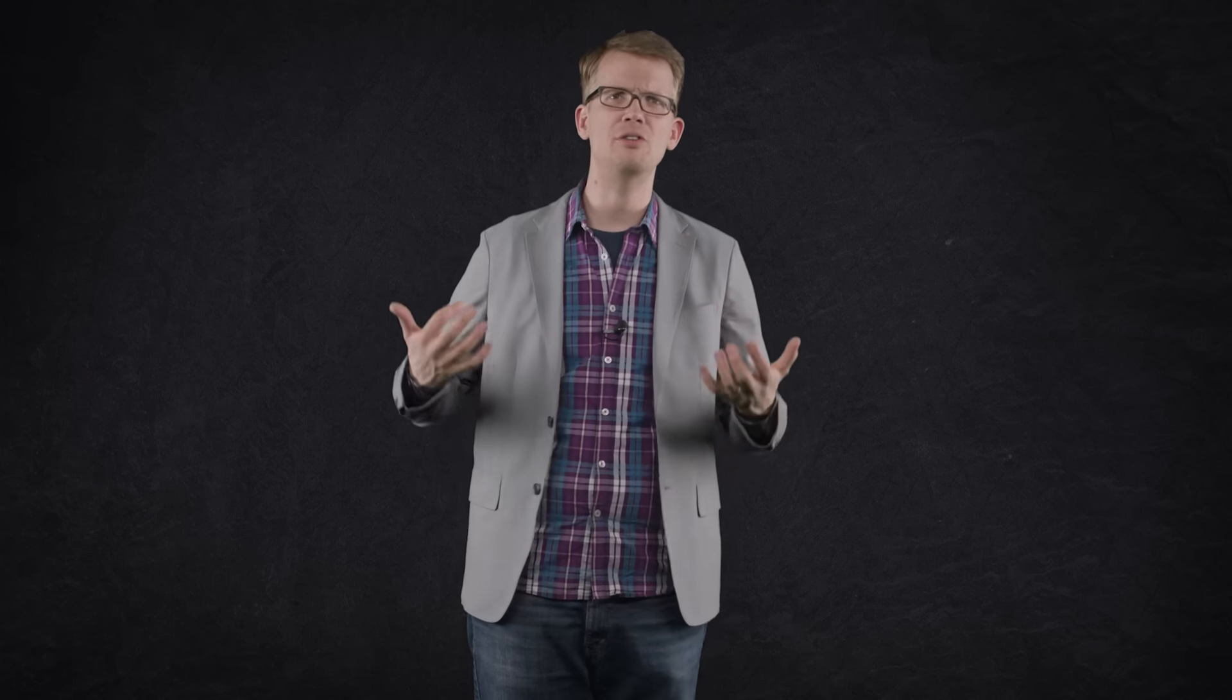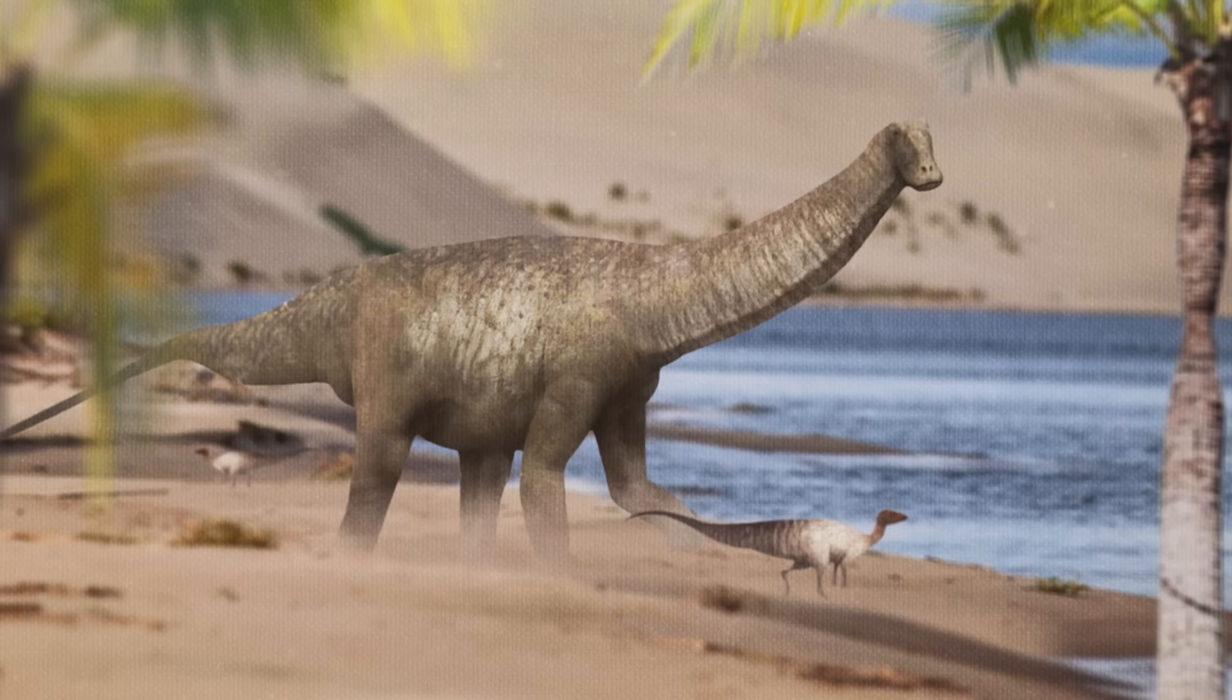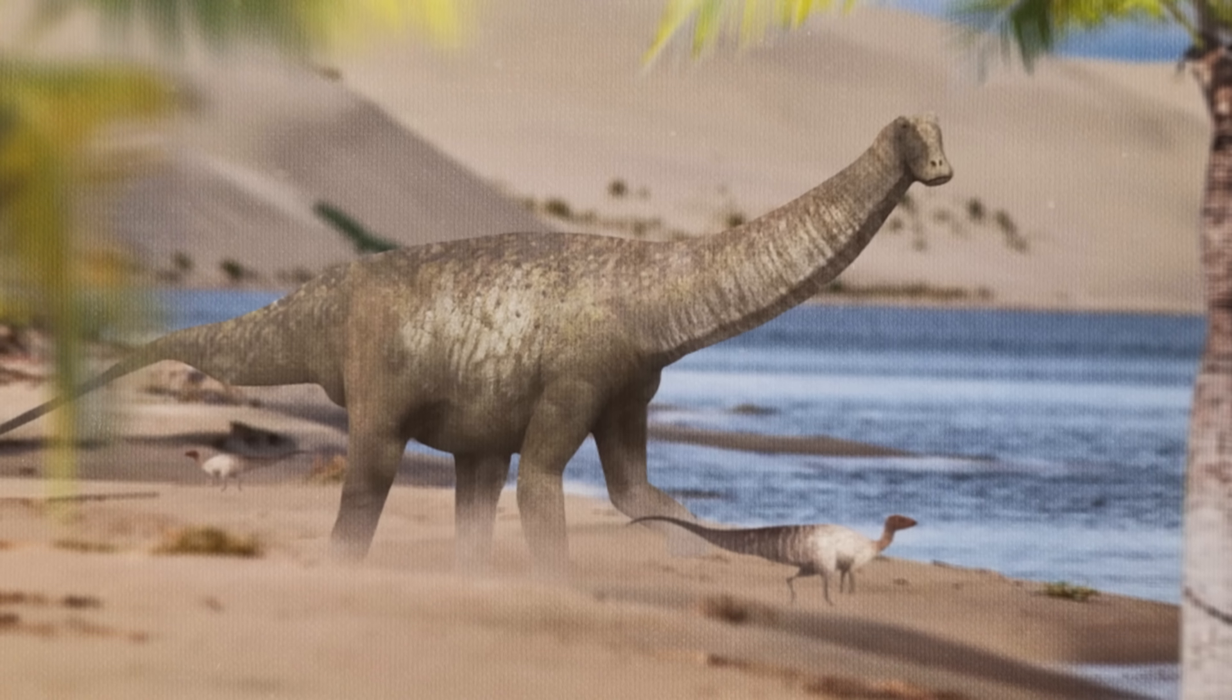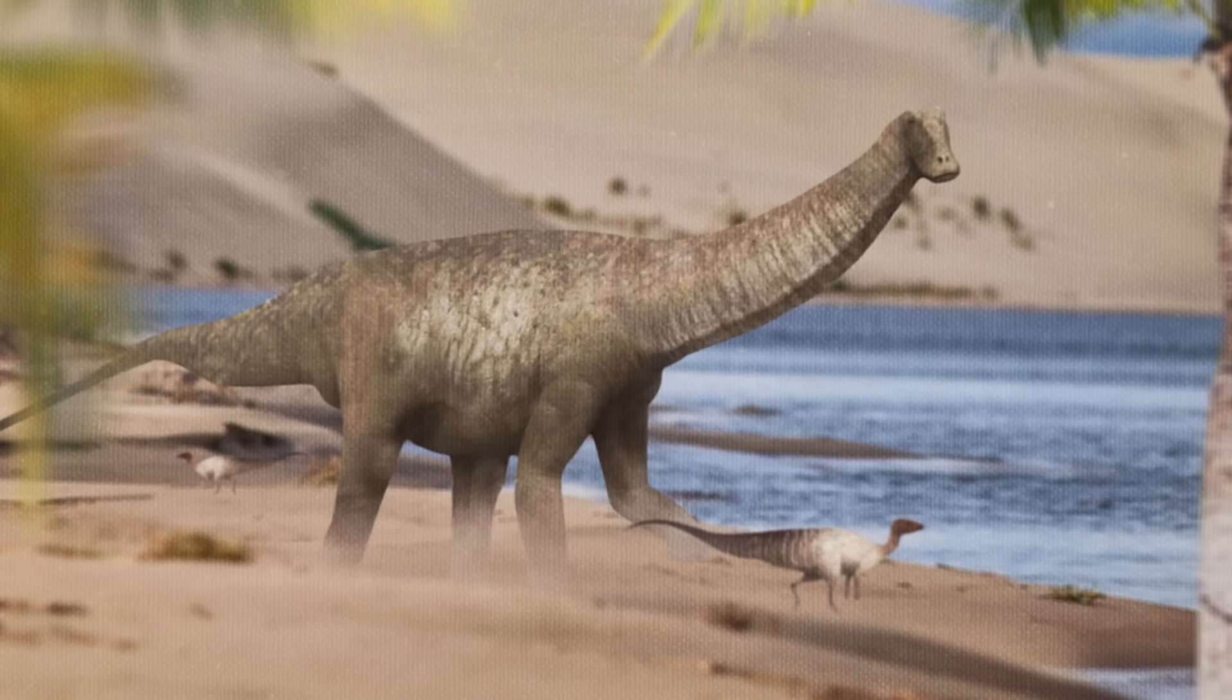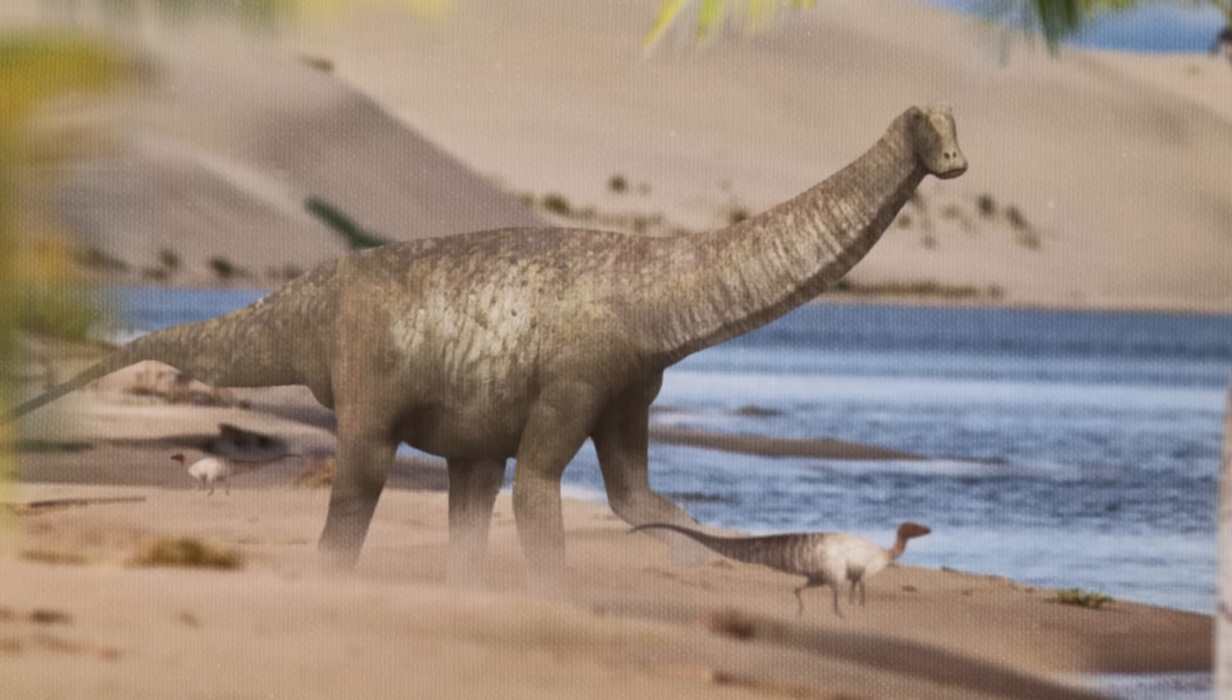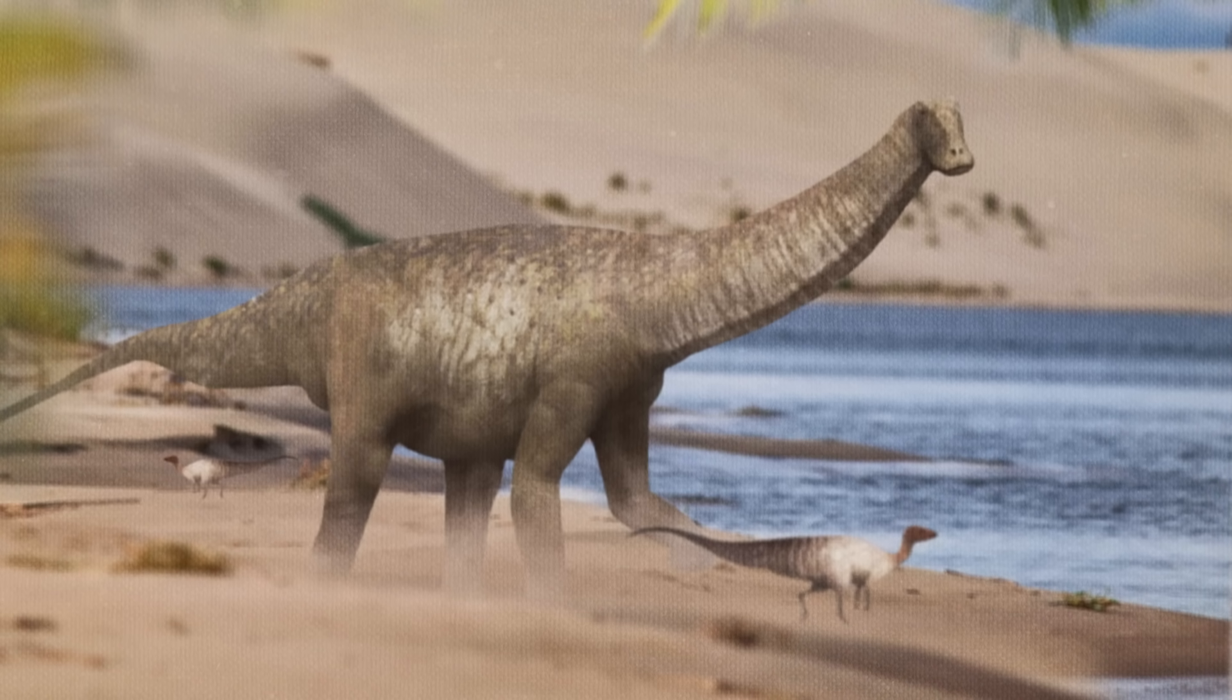But the thing is, these adaptations are just what allowed dinosaurs to get so big. They don't tell us why these giants got so enormous in the first place. And that's a totally different evolutionary question, with lots of possible answers. Maybe living large was a way to stay safe from predators. Or maybe their size allowed dinosaurs to cover more ground, or reach higher leafy branches in search of food. Or maybe there's something paleontologists haven't thought of yet.